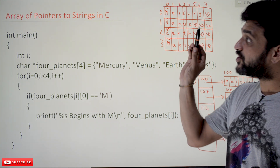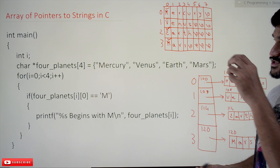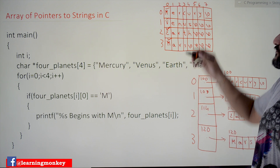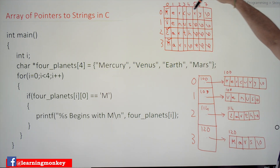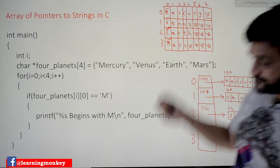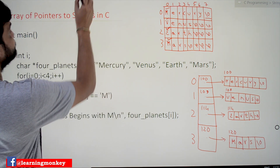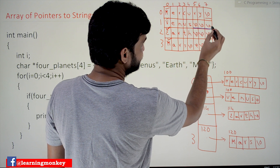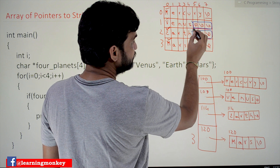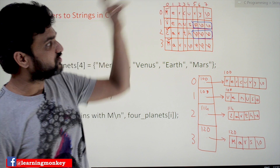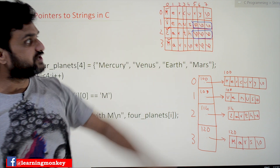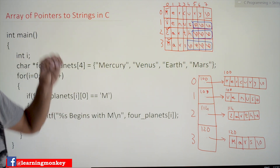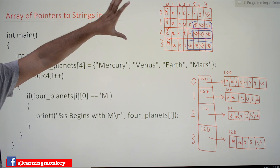Now coming to this class, we'll try to understand array of pointers to strings. As we discussed in our previous example, when we create an array of strings, null values get created at the end. One null value is sufficient to mark the end of a string, but the empty spaces are also filled with null values — and this is a waste of space.